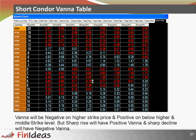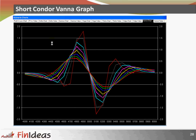Short condor vanna table: vanna will be negative on a higher strike price and positive below the higher and middle strike levels. A sharp price rise will have a positive vana and a sharp decline will have a negative vana. Near the 5200 level we are having negative vana, below that we are having positive vana. The graph confirms negative vana near the 5200 levels, positive vana on a sharp rise, and negative vana on a sharp decline.